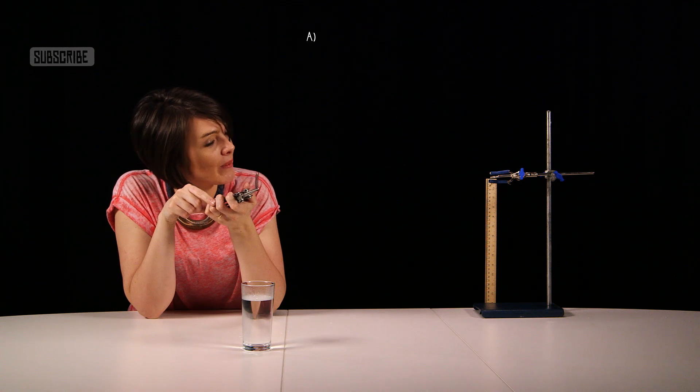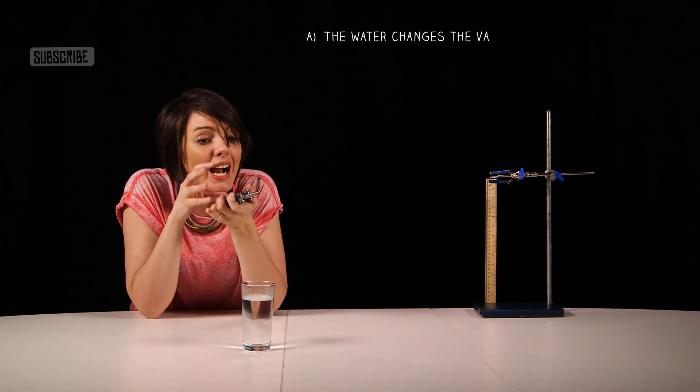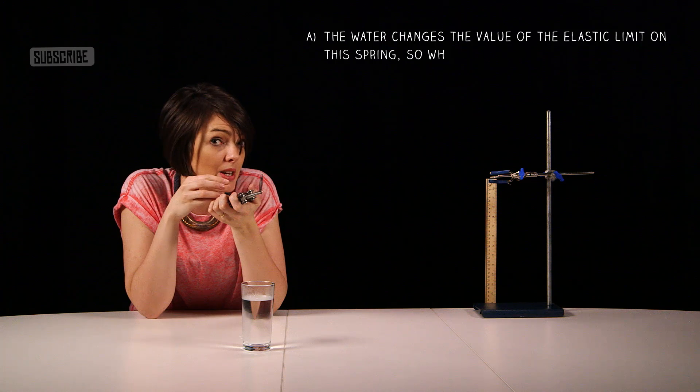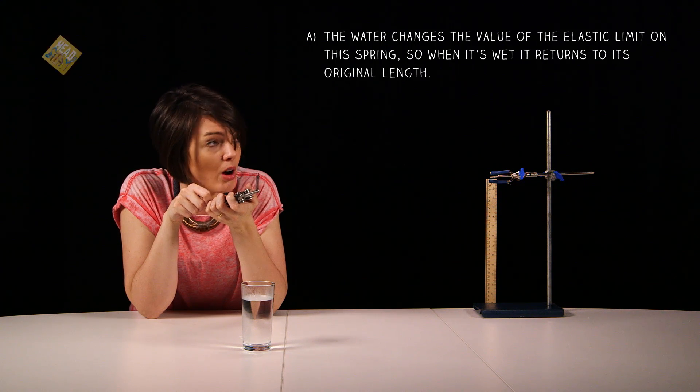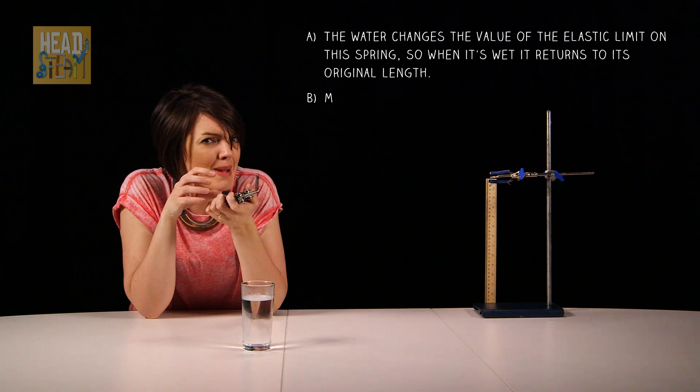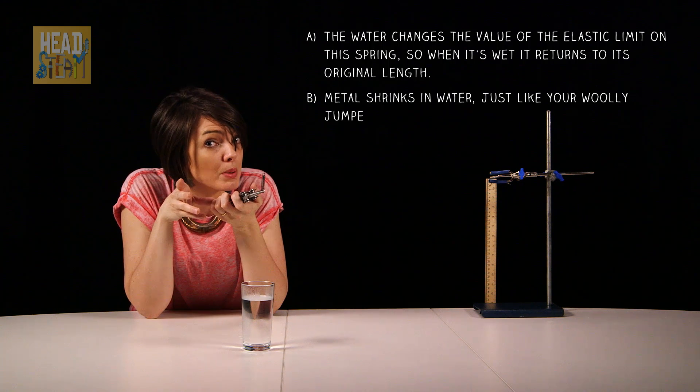Is it A: the water changes the value of the elastic limit on this spring so when it's wet it returns to its original length. Or is it B: metal shrinks in water just like your woolly jumpers do.